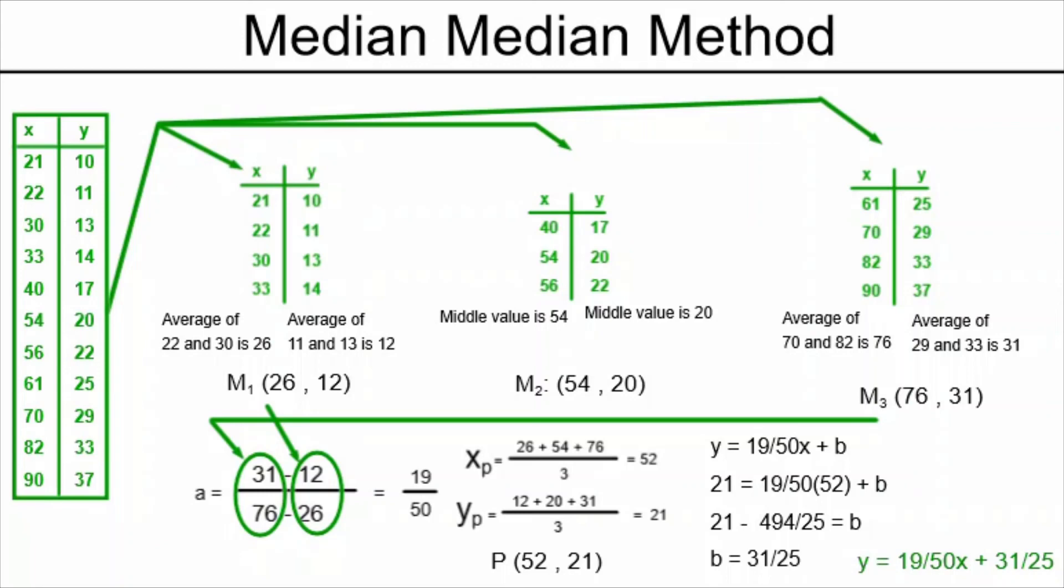The last thing we have to do is arrange that y-intercept and the slope into the y equals ax plus b form so that we can give our regression equation our final answer. That is today's daily dose of math. Please like, subscribe, and share.